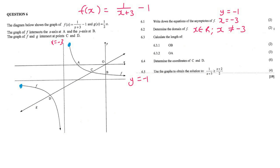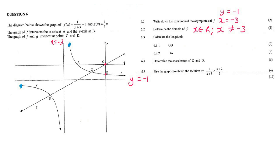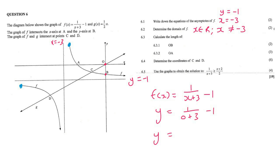Calculate the length of OB. When you see O, we know that's the origin. B is the y-intercept of the hyperbola. So I take the hyperbola's equation and find the y-intercept by making x equal to 0. This gives us negative 2 over 3. Now be careful — the length of OB will be 2 over 3, because you can't say that a length is a negative value.